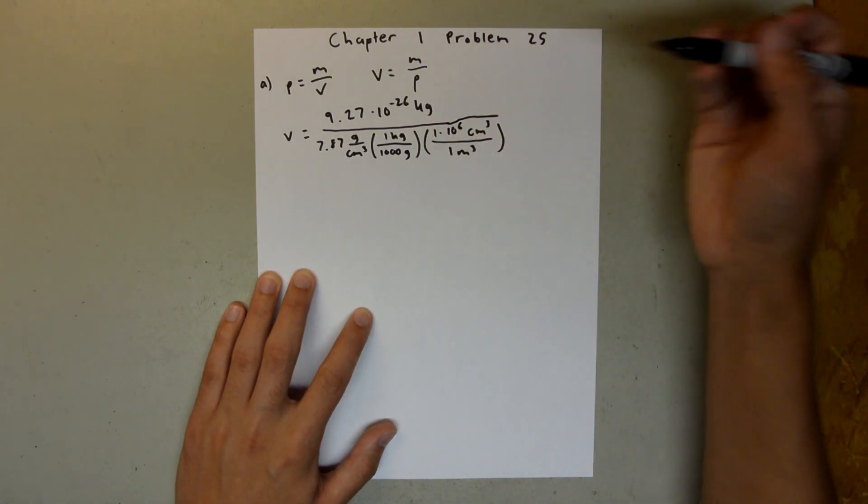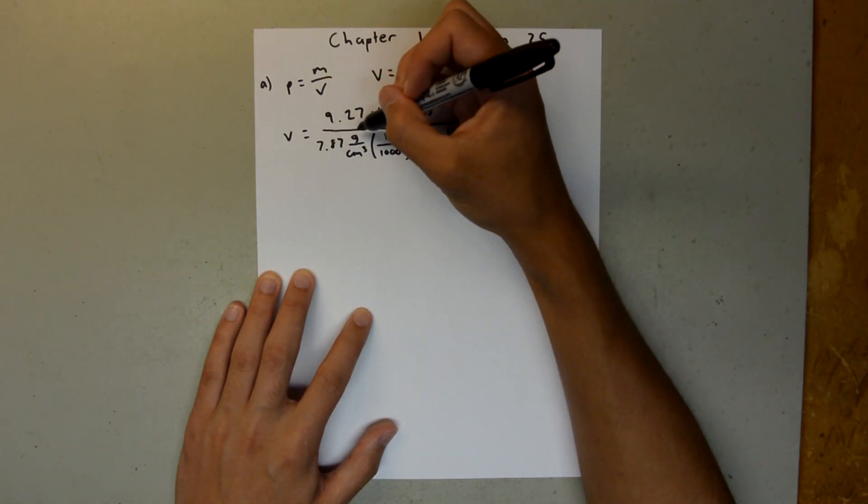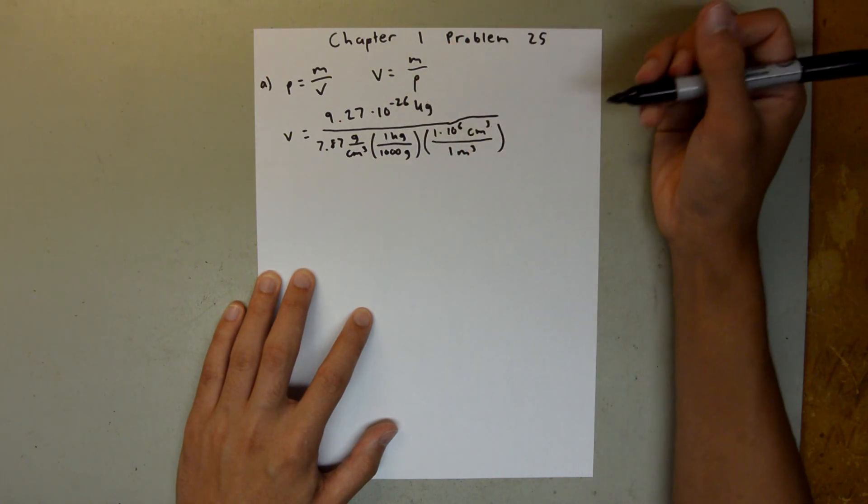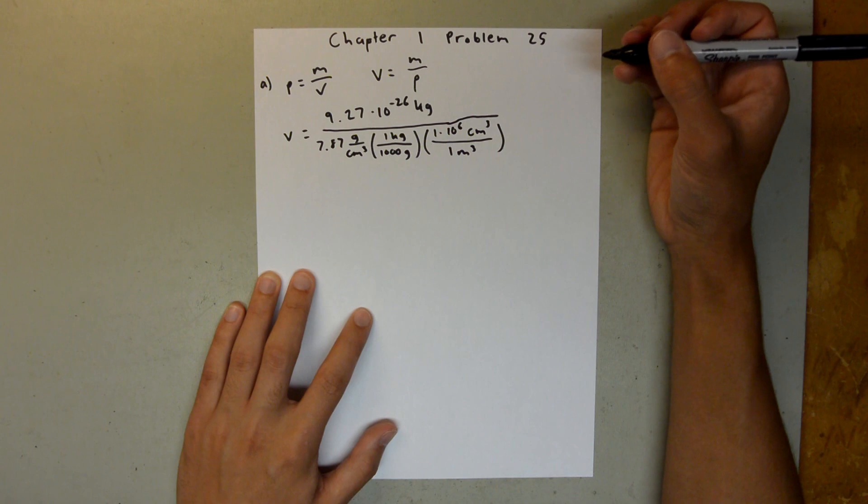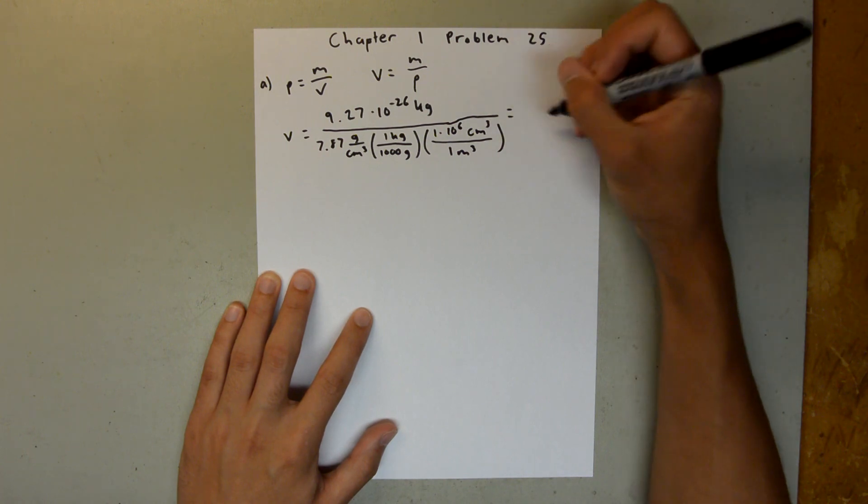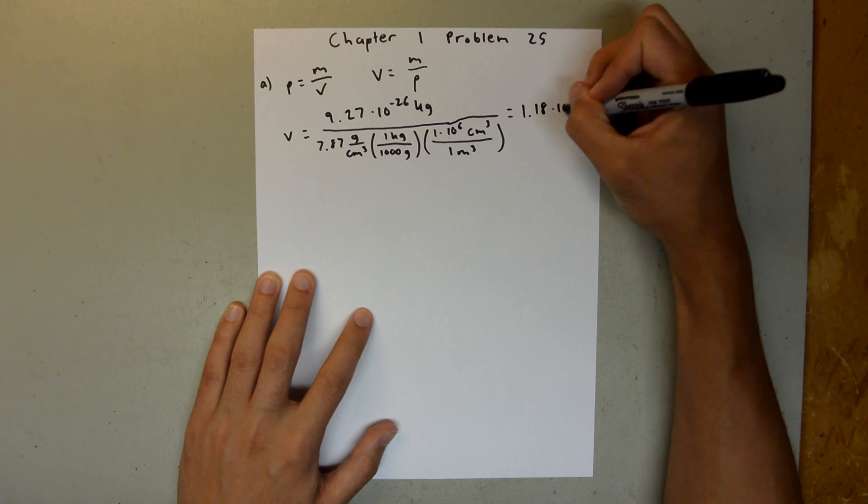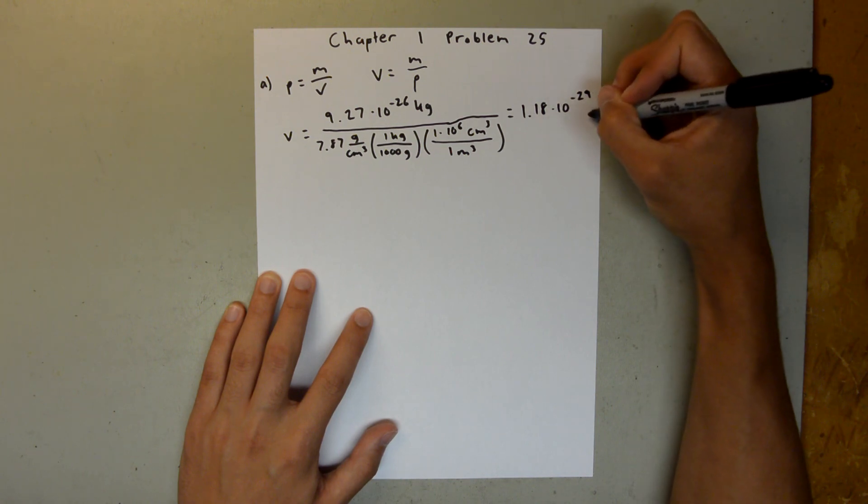So now we just converted our 7.87 grams per centimeter cubed, and if you plug that into your calculator, you should get 1.18 times 10 to the negative 29th meters cubed.